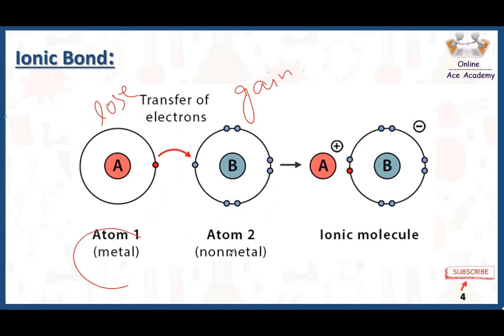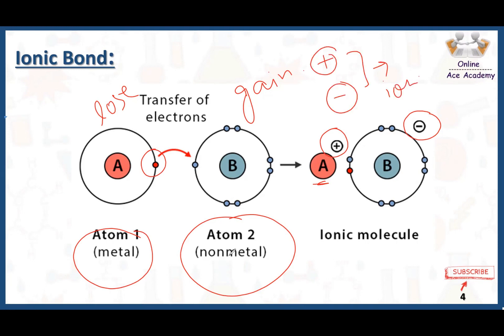Metals usually lose their electrons and non-metals gain electrons. After losing an electron in the outermost shell, the metal atom gets a positive charge, and after gaining an electron in the valence shell, the other atom gets a negative charge. This positive and negative charge will have a force of attraction, which is the cause of the ionic bond between the two atoms.